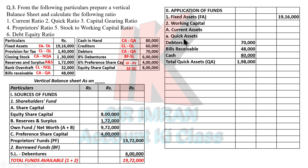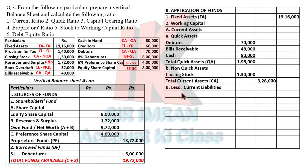Non-quick assets have only one entry: closing stock 1 lakh 30,000, also called inventories. Adding quick assets and non-quick assets gives total current assets: 3 lakh 28,000. Now the second part — current liabilities. Current liabilities also have two headings: quick liability and non-quick liability. Quick liabilities: provision for tax and creditors. Non-quick liability: bank overdraft.